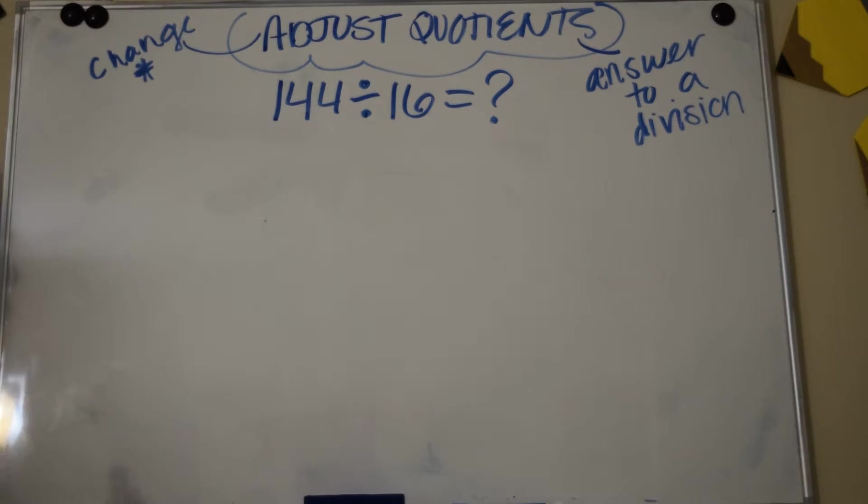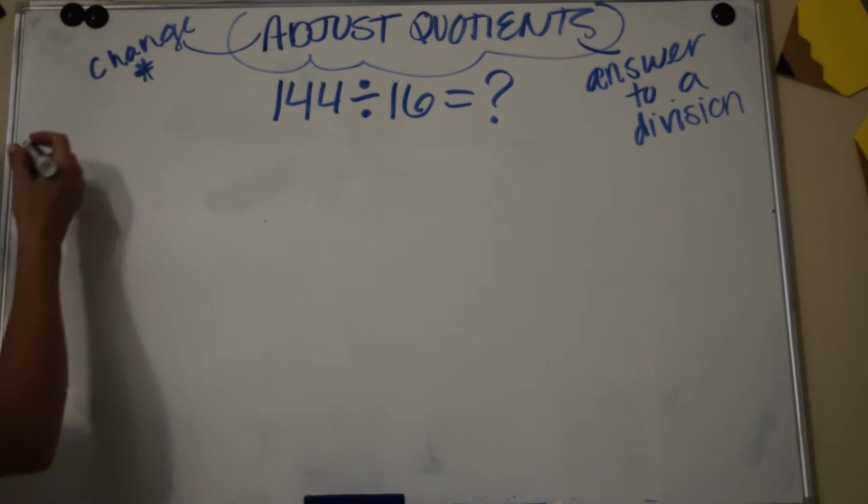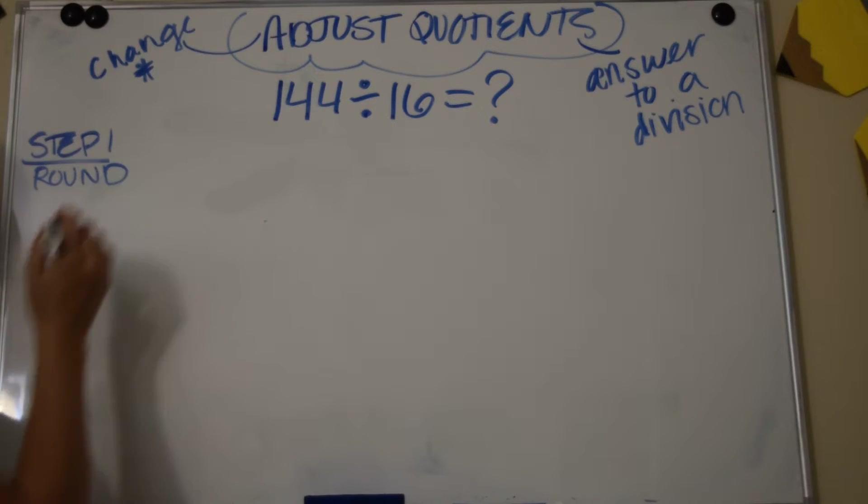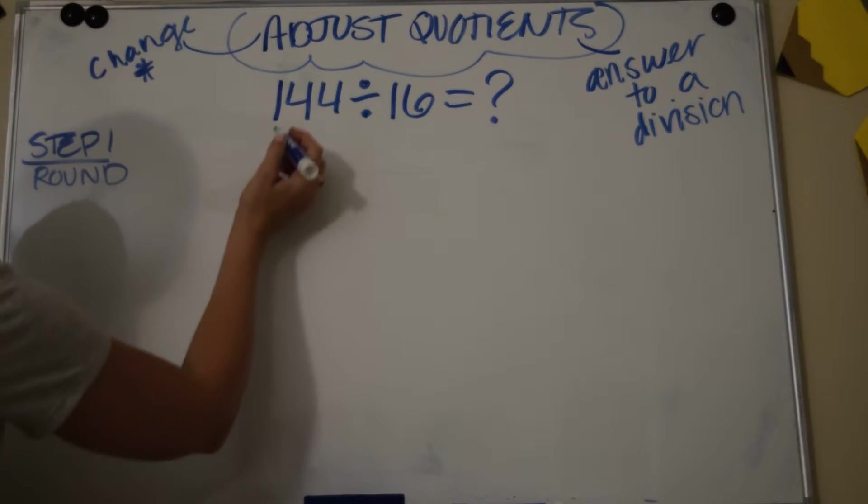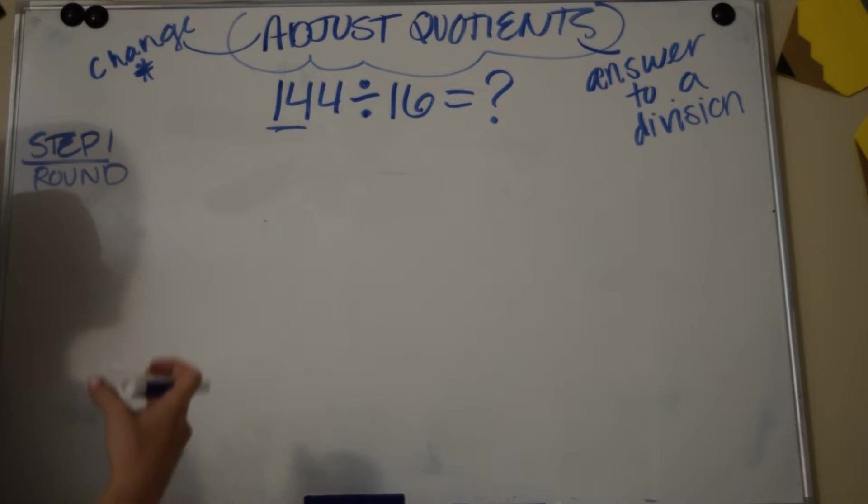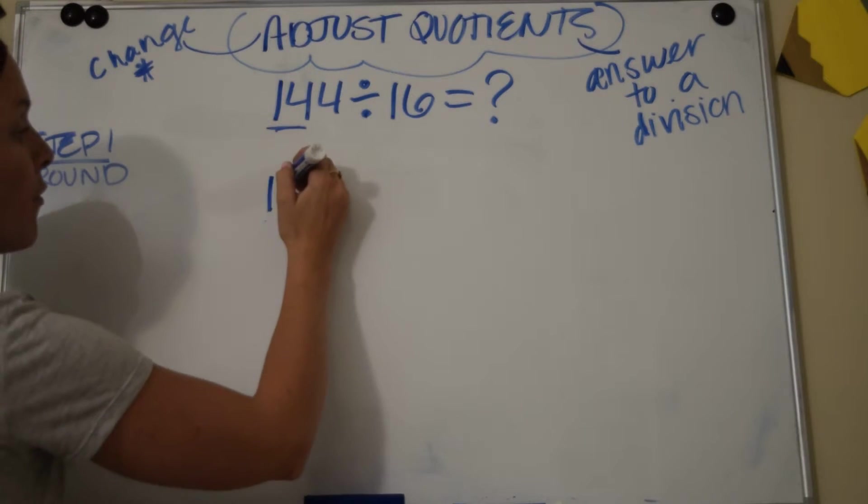So let me show you what that means. This is the steps that you're going to do. Step one is you're going to round. Now you want to round to compatible numbers or fact families, so always focus on these first two digits here and change it into a hundreds number. So I'm going to do 140 and get rid of that four.